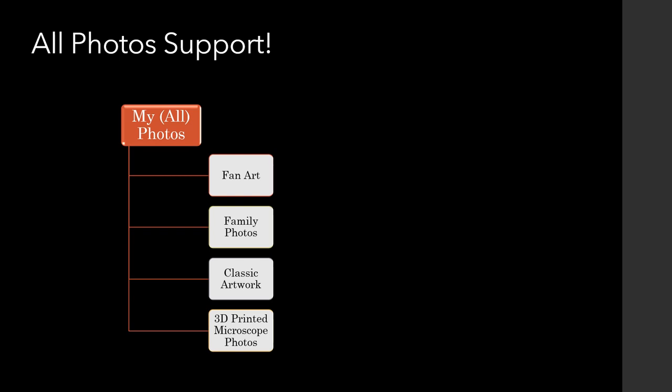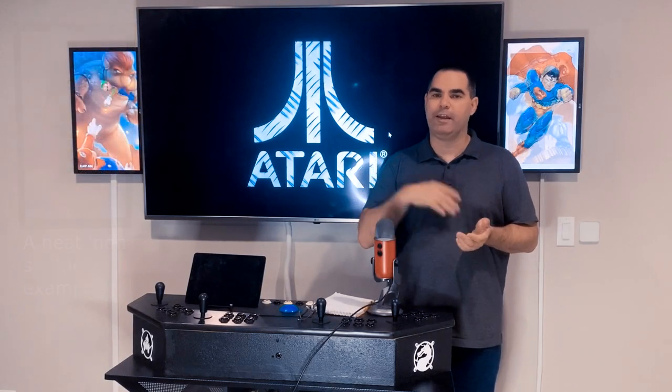Another simple but important feature is all photos mode. Before you could only do a specific folder playlist; now you can actually play all photos in your library. Along with that comes shuffling — you can choose to shuffle the playlist. Not shuffling is cool if you want a specific progression, but shuffling is great if you get bored of the same photos in the same order. That setting will also persist across reboots.